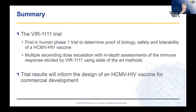The VIR 1111 trial's goal is to determine the proof of biology, safety, and immunogenicity of this prototype vaccine, using dose escalation and state-of-the-art methods to assess immunity. As is the case for many experimental medicine trials, this trial is intended to inform the design of a vaccine that would be used for commercial development. At the same time, it informs the use of CMV as a platform for other disease indications. Thank you.